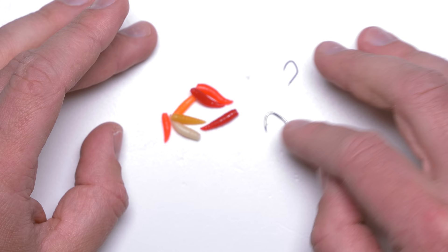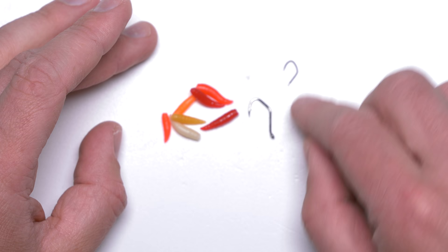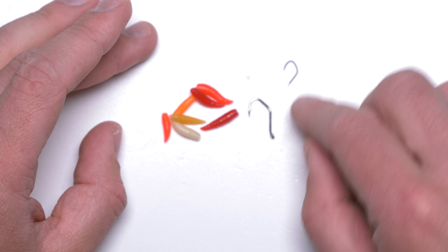And also I will be using a very big hook. You would never use such a hook when threading maggots on it. So that's a size 6 and that's a size 12.